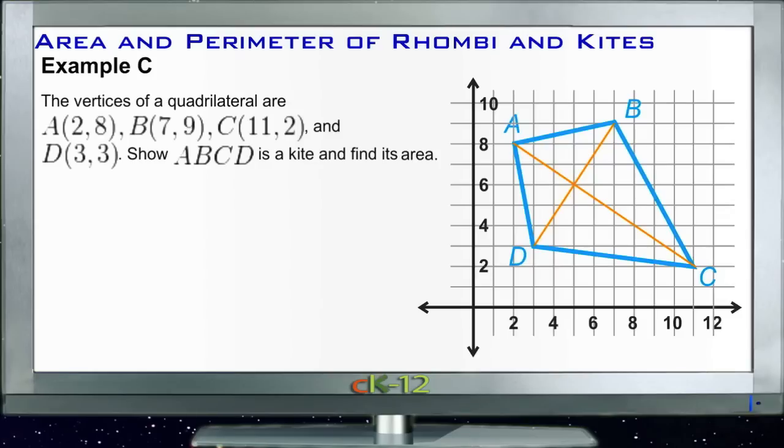Alright, now example C. For example C, we need to see if this shape here is actually a kite. And we're just given the four vertices of a quadrilateral, so what we're going to do is plot those four points. So our points 2, 8, 7, 9, 11, 2, and 3, 3—those are all plotted here and marked ABCD.